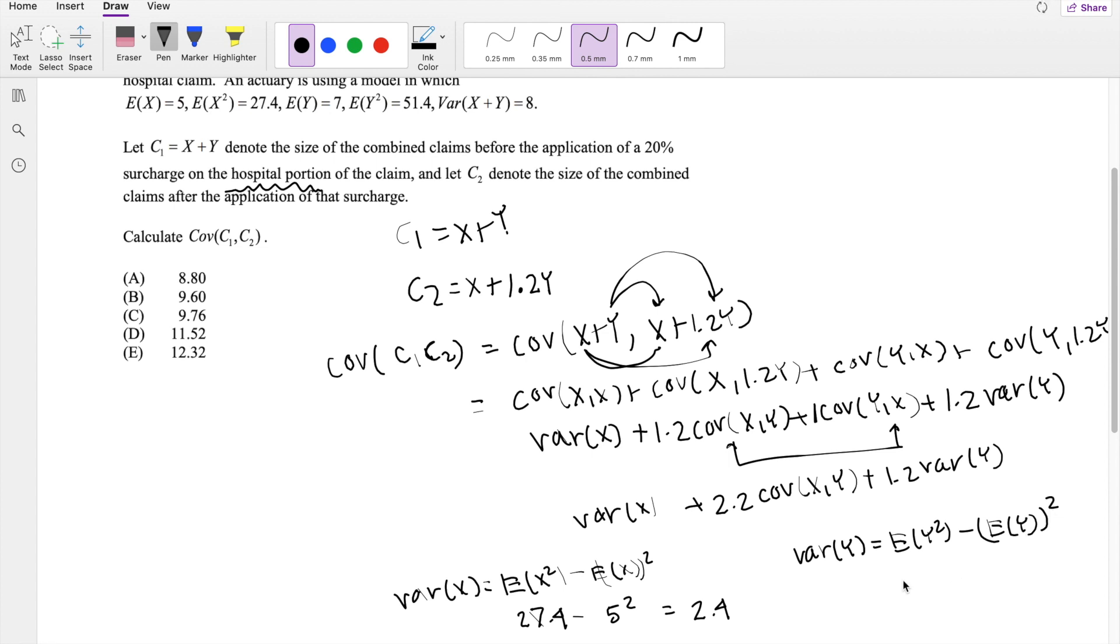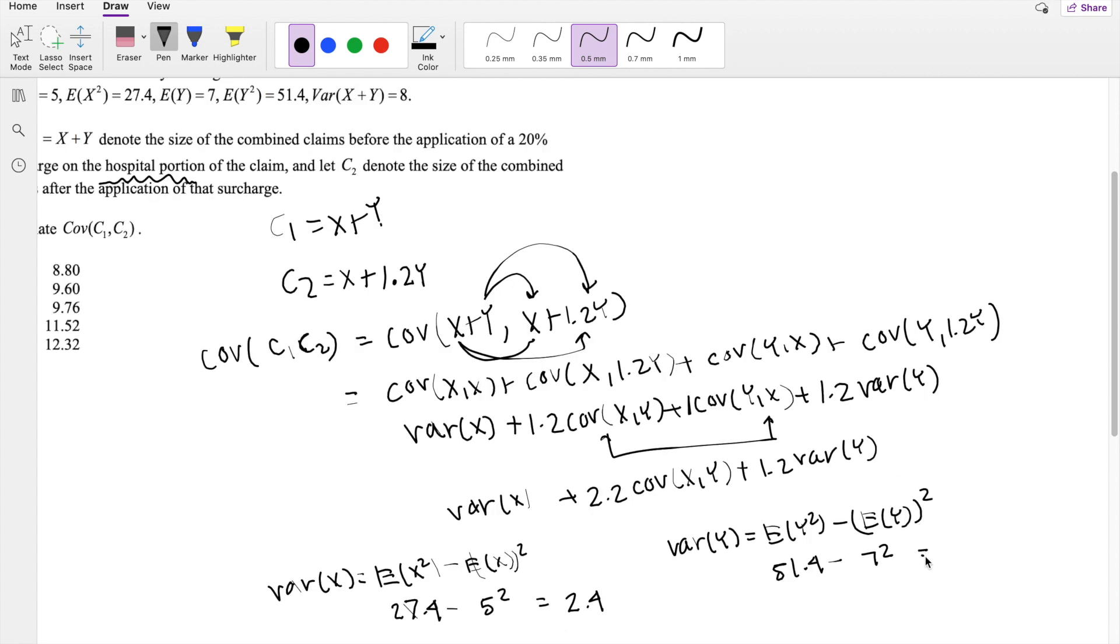So the second moment of Y is 51.4, and the first moment of Y is 7 squared, which is also equal to 2.4.